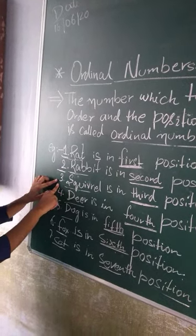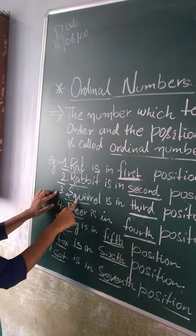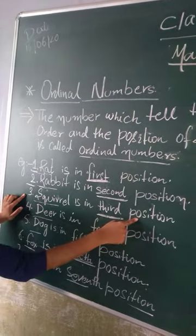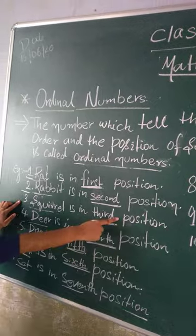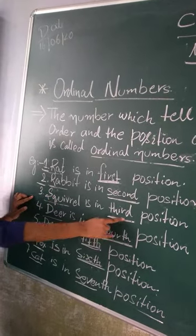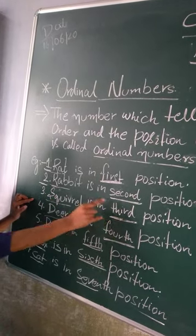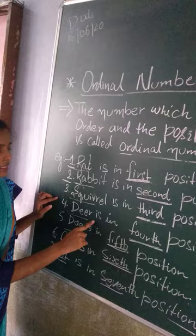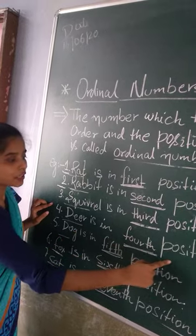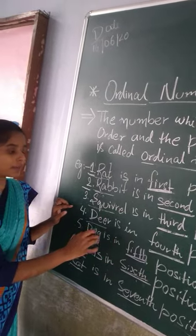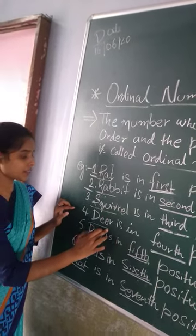The third is Squirrel. Squirrel is in third position. The fourth is Deer. Deer is in fourth position.